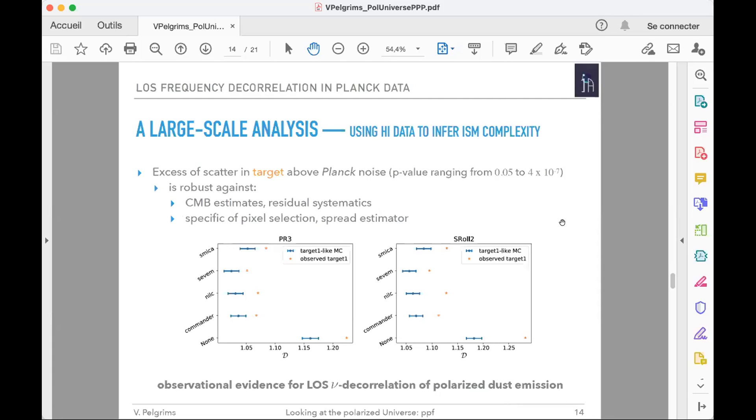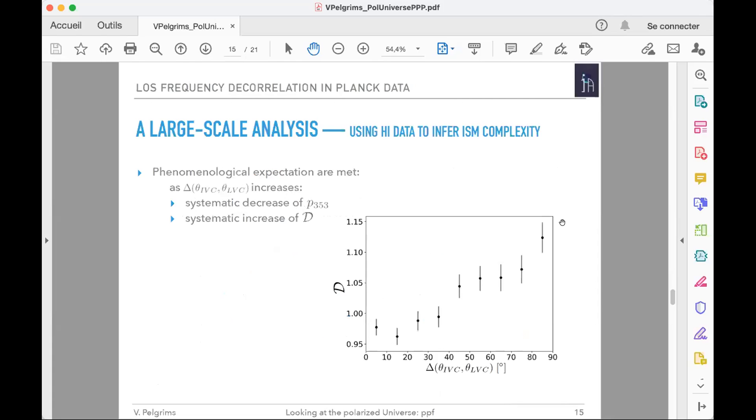Our results are robust against specifics in our analysis, such as pixel selection and choice of spread estimator. We're confident to say this is the first observational evidence for line-of-sight frequency decorrelation of polarized emission. What makes us more confident is that we found all phenomenological expectations. For example, if the angle between magnetic field orientations increases, we expect a decrease in degree of polarization, which we observe, and a systematic increase of D, which we also observe as shown in these plots.